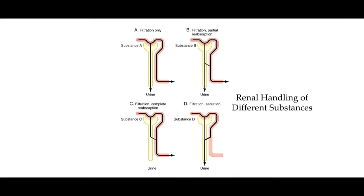What is the maximum size? 69 kilodaltons, which is roughly the size of albumin. Anything bigger than that is not meaningful. Anything smaller than 5.5 kilodaltons can filter very freely. Anything a little bit bigger than that but still less than 69 kilodaltons is going to be filtered — just a little more slowly. The bigger the molecule, the more slowly it filters.